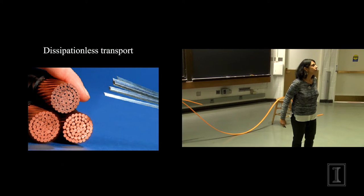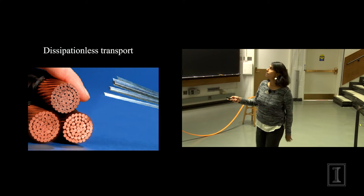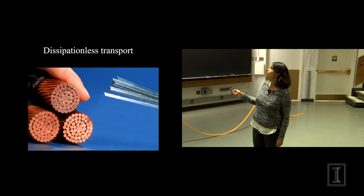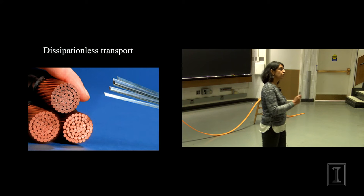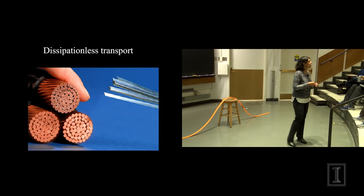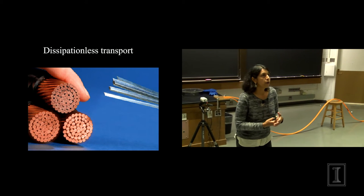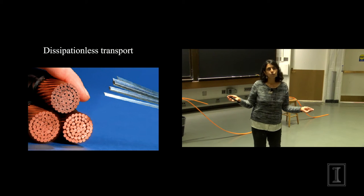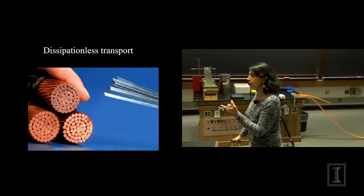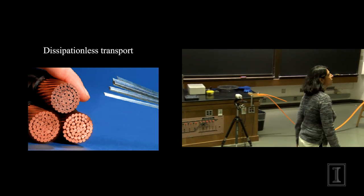We could do much more if we could get room temperature superconductors. You can imagine replacing the thick cables that carry current with something much thinner, losing no energy as you carry current from one part of the world to the other. All your cars could be based on superconductivity, exhaust fumes would not be a problem anymore — we would at once solve our world energy problems and our emissions problems. This is the holy grail in our field.